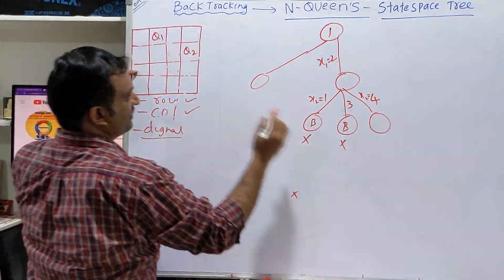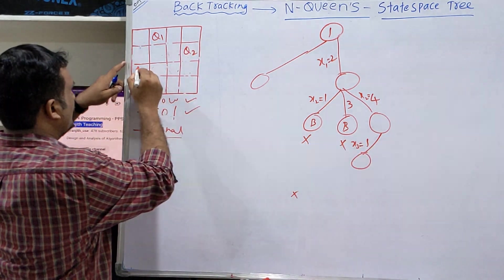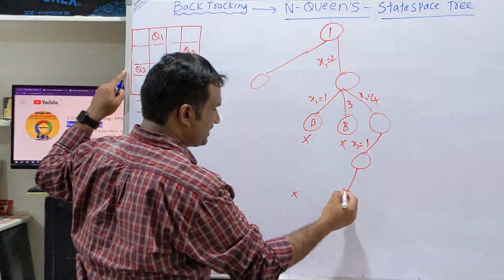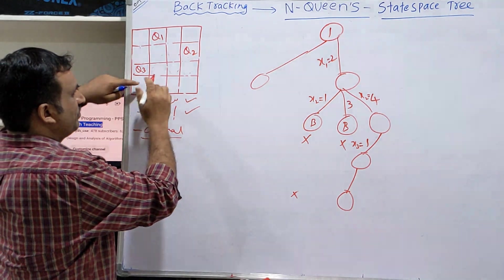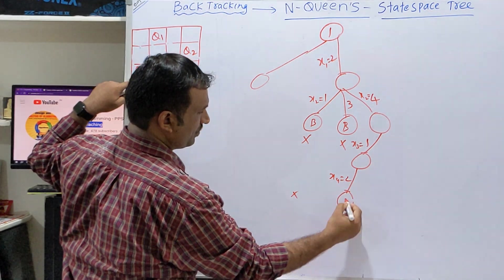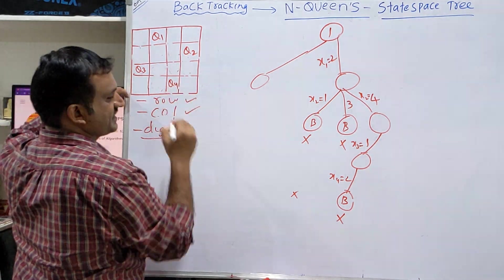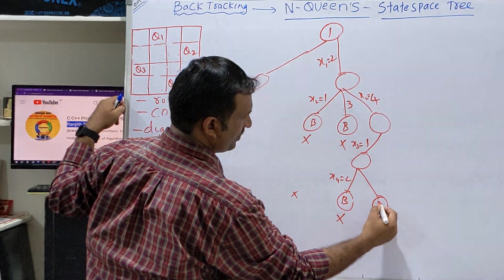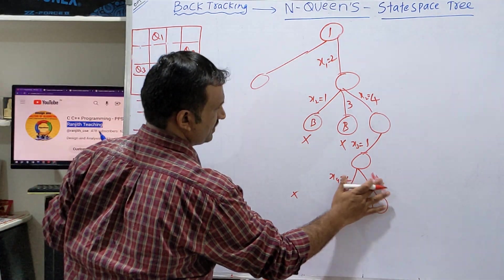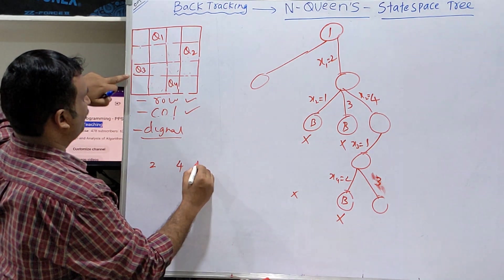After placing queen 3 in the first position, can you place queen 4 here? Same column. Can you place it here? No — x4 equal to 2. Backtrack. Can you place queen 4 here? Yes — queen 4 in the third position. So if you observe, the solution is: x1=2, x2=4, x3=1, x4=3.